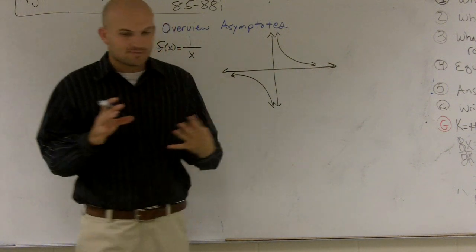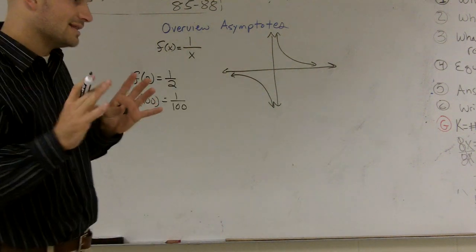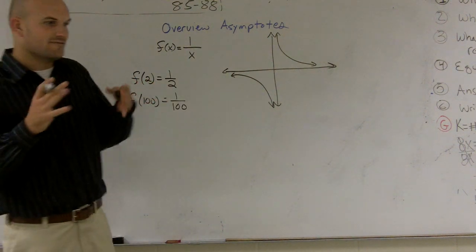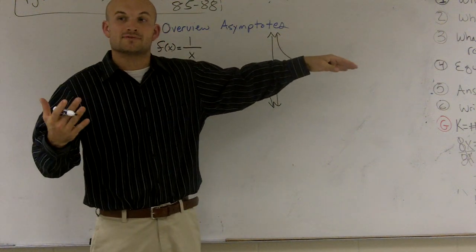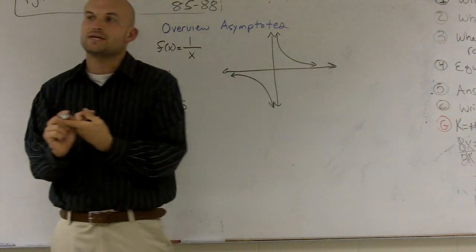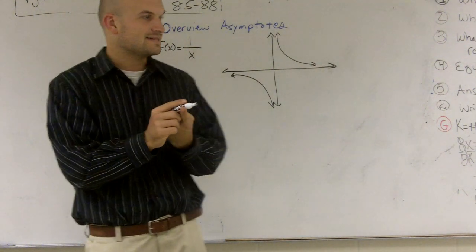So what an asymptote is, is it's a line, it's a point, it's a value that your graph is going to keep on approaching without bound, meaning that it's going to keep on approaching it, but it's never going to reach it, nor is it ever going to pass it.